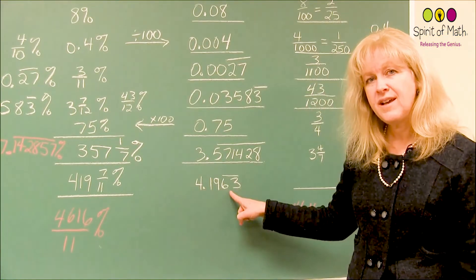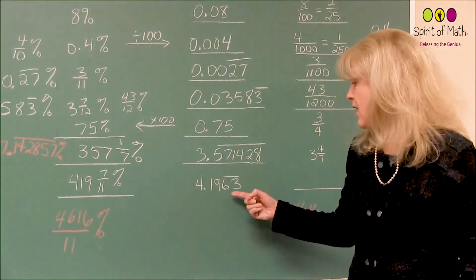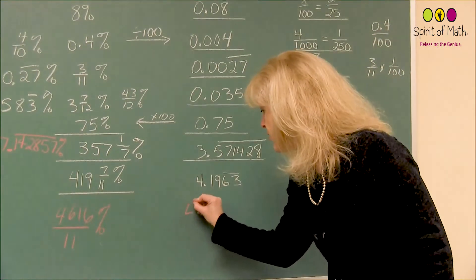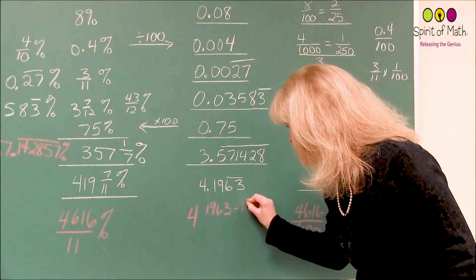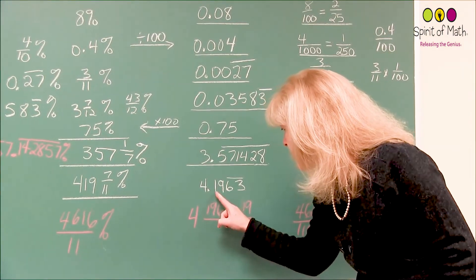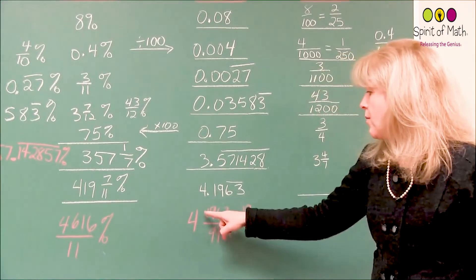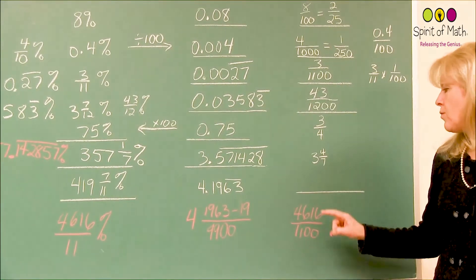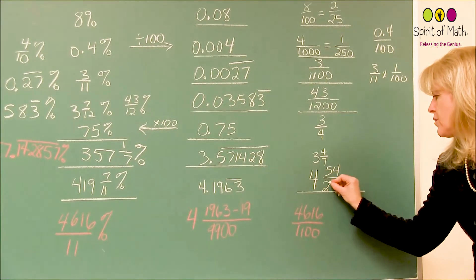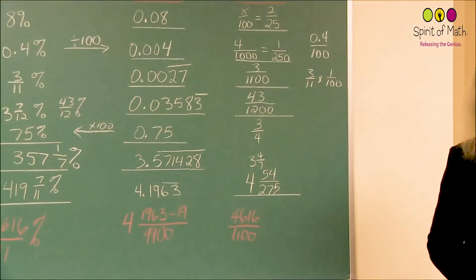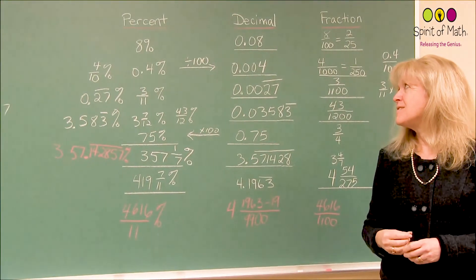Alternatively, you could take the decimal 4.1963 repeating and convert it directly to a fraction using the repeating decimal method: 4 and 1963 minus 19, all over 9,900 — with 2 non-repeating digits giving 00 and 2 repeating digits giving 99. Once you reduce and put it into mixed form, you get 4 and 54 over 275 as your answer. So those are the conversions — just be careful and take your time, because it's the detail that will make the difference. Have fun.